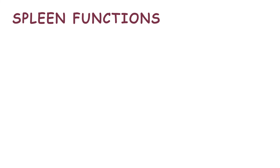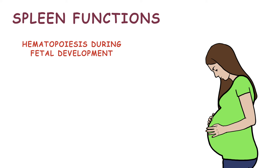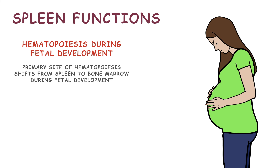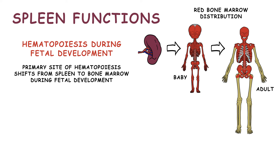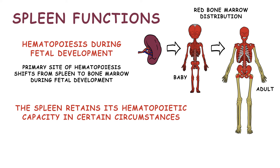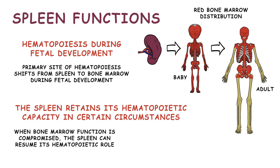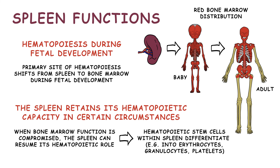The spleen also plays a role in hematopoiesis during fetal development. Although the primary site of hematopoiesis shifts from the spleen to the bone marrow during fetal development, the spleen retains its hematopoietic capacity in certain circumstances. In certain hematological disorders or situations where bone marrow function is compromised, the spleen can resume its hematopoietic role, with hematopoietic stem cells differentiating into various blood lineages, producing erythrocytes, granulocytes, and platelets.